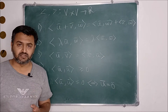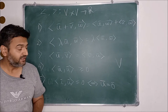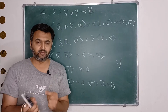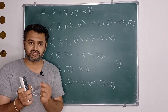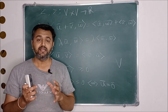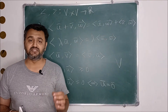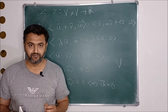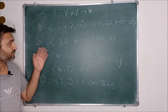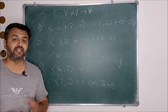So what is an inner product? It's a function. If you have a vector space V over real numbers, then an inner product is a function from V cross V to R. It will take two vectors from the vector space and you define a function on those two vectors so that your output is a real number. And if that function satisfies these five properties, then we say that function is an inner product on V, and in such a scenario we call V to be an inner product space.